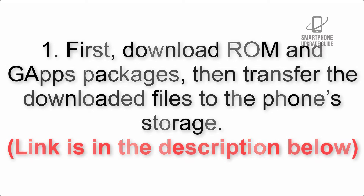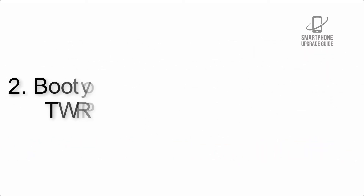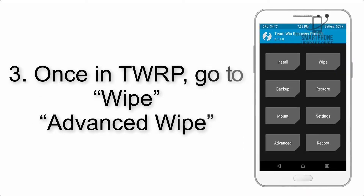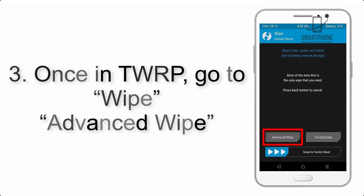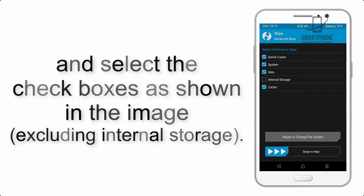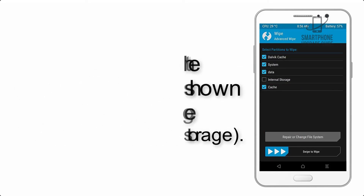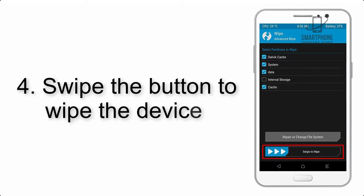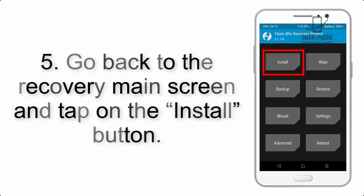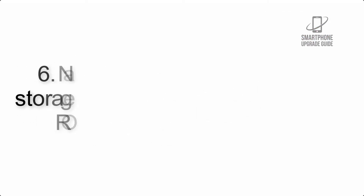Step 2: Boot your device into TWRP recovery. Once in TWRP, click on Wipe, then Advanced Wipe and select the checkboxes as shown in the image, excluding internal storage. Step 4: Swipe the button to wipe the device.